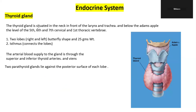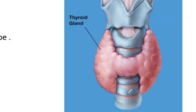The thyroid gland is situated in the neck, in front of the larynx and trachea. So where is it in the neck? Front of trachea and larynx.